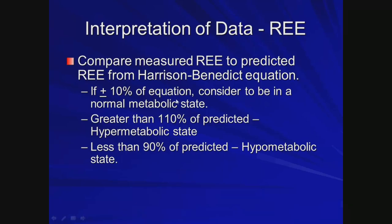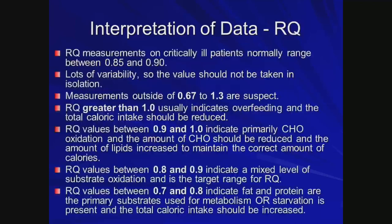The problem with using predicted values is that we really don't know how much energy the patient is expending. Saying feed them 10% more than predicted is a poor way of approaching it — it's essentially using the SWAG method. More appropriately, we should actually measure the REE directly.